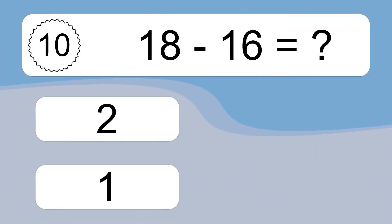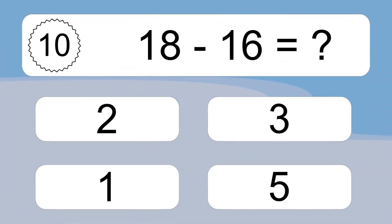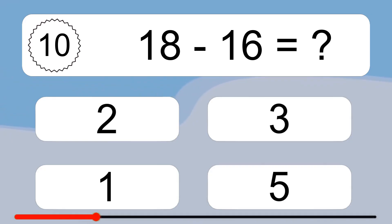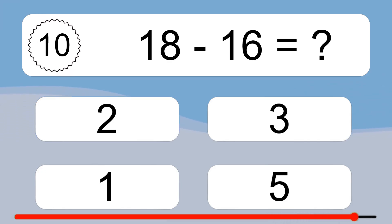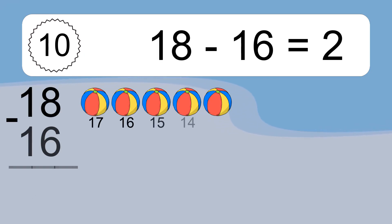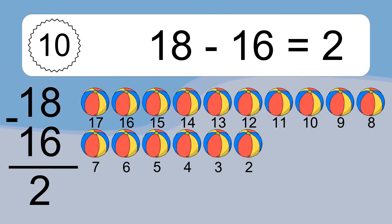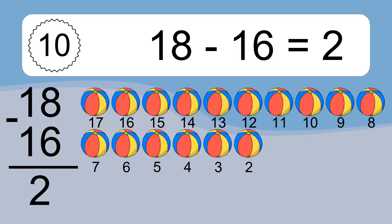18 minus 16 equals what? 18 minus 16 equals 2. Let's count it. 17, 16, 15, 14, 13, 12, 11, 10, 9, 8, 7, 6, 5, 4, 3, 2.